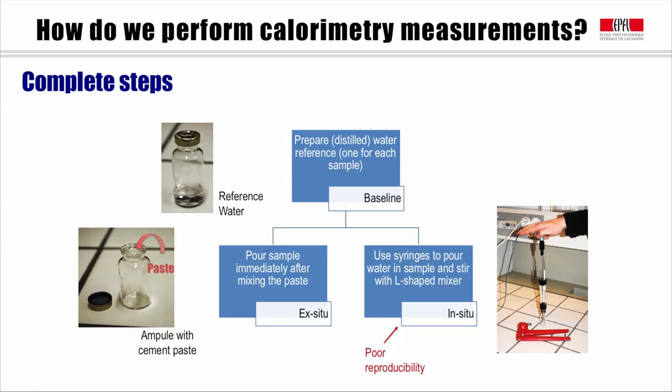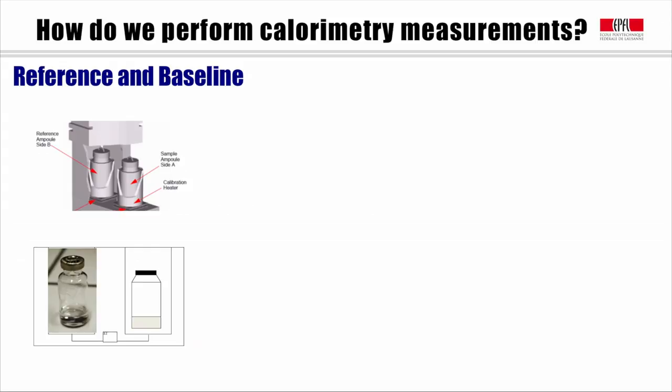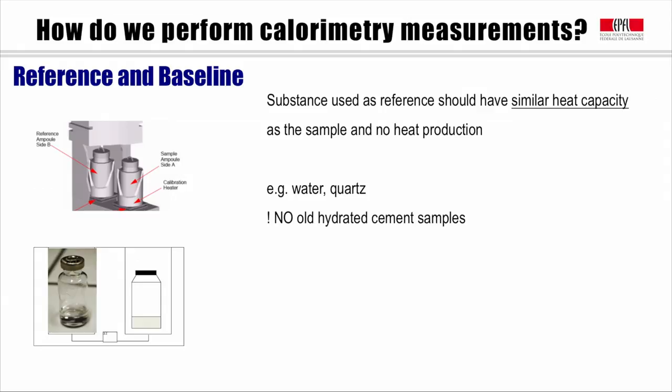First thing we need to do now is to select a reference and prepare it. The principle for choosing a reference is that the reference should have no heat production during temperature change. Commonly used references are water and quartz sand. Please remember do not use old hydrated cement samples, since the hydration of cement even when it is matured will not be ended completely.